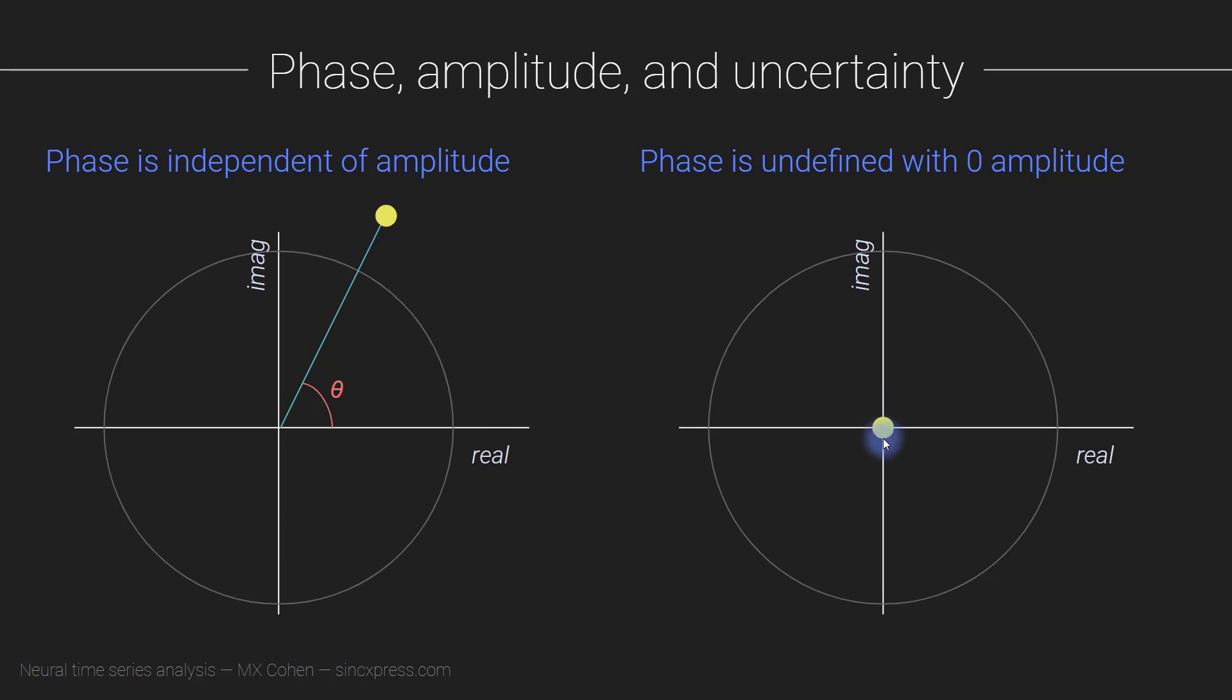It's undefined. The question doesn't even make sense. You can think about that also from a trigonometric perspective. We quantify the angle here such that the tangent of this angle is the ratio of the imaginary part to the real part. If the imaginary part and the real part are both zero, then we're taking the tangent of zero over zero. So it's undefined. It doesn't exist.